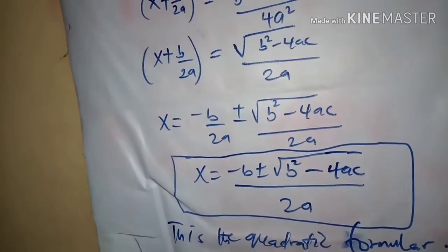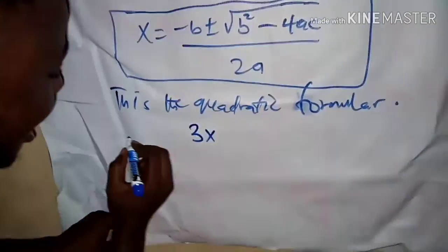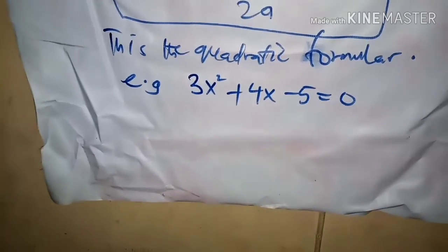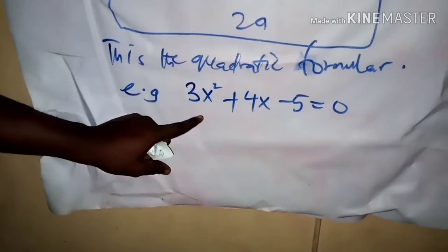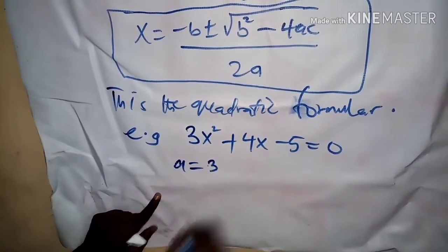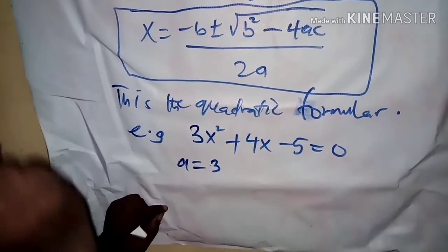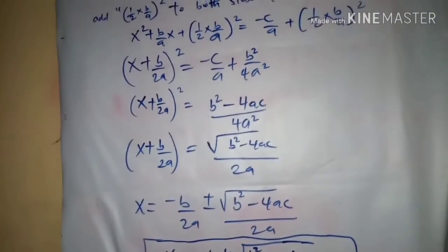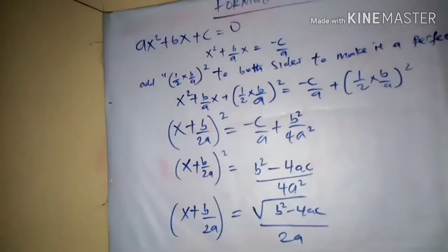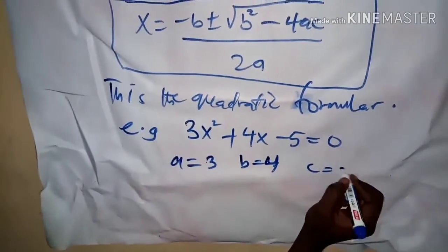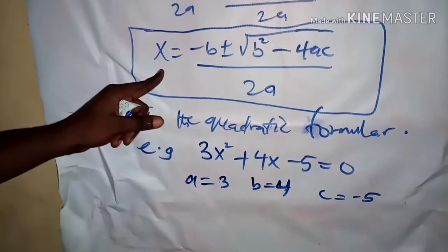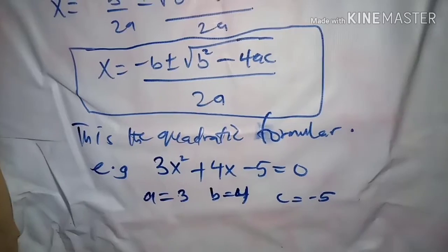So if you have an equation such as 3x² + 4x - 5 = 0, to use the quadratic formula you identify: a is the coefficient of x², which is 3; b is the coefficient of x, which is 4; and c is the constant term, which is -5. You then insert all these values into the quadratic formula to find x.